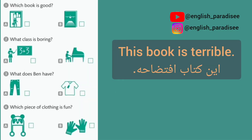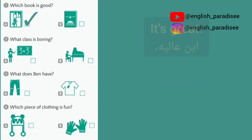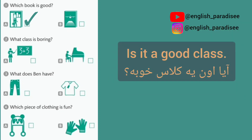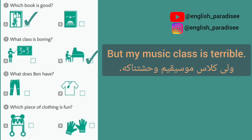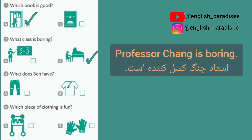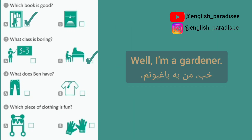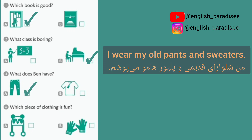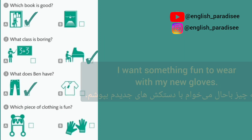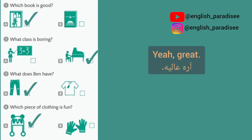«This book is terrible. It's called In the Sky. Read this instead — it's great. It's called In the City.» «Oh, it's English next. Is it a good class?» «Yeah, it's great. I like Professor Lewis. But my music class is terrible — Professor Chang is boring.» «Ben, those pants are old. They are horrible.» «Well, I'm a gardener, so I don't wear new pants. I wear my old pants and sweaters. I want something fun to wear with my new gloves. How about this hat?» «Yeah, great — it's fun.»